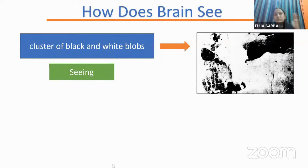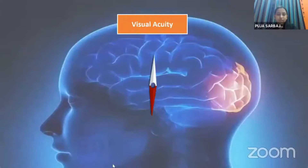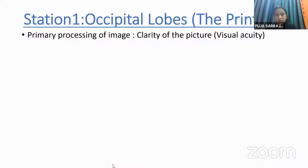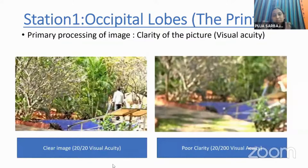I'm going to divide the brain into different stations. Station one is the occipital lobe — it acts like a printer. When you put an image in a printer, a picture comes out with similar color, contrast, and field. That is primary processing of the image — the clarity of the picture, called visual acuity. A child with CVI will see similarly to a 20/200 vision level, with faded color.